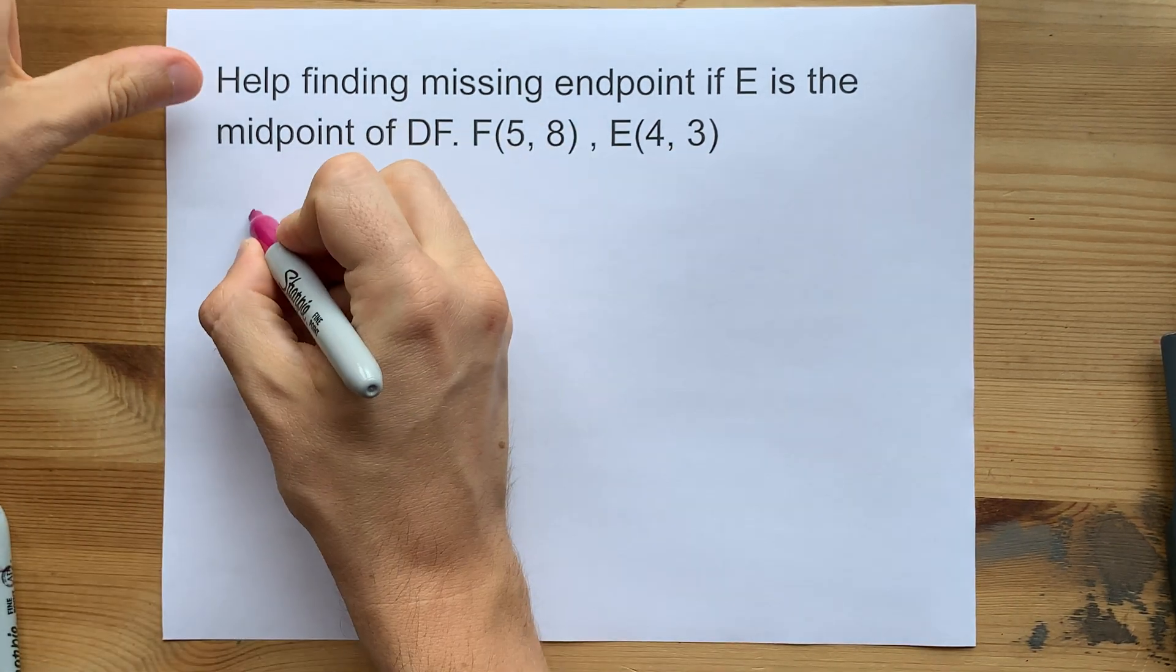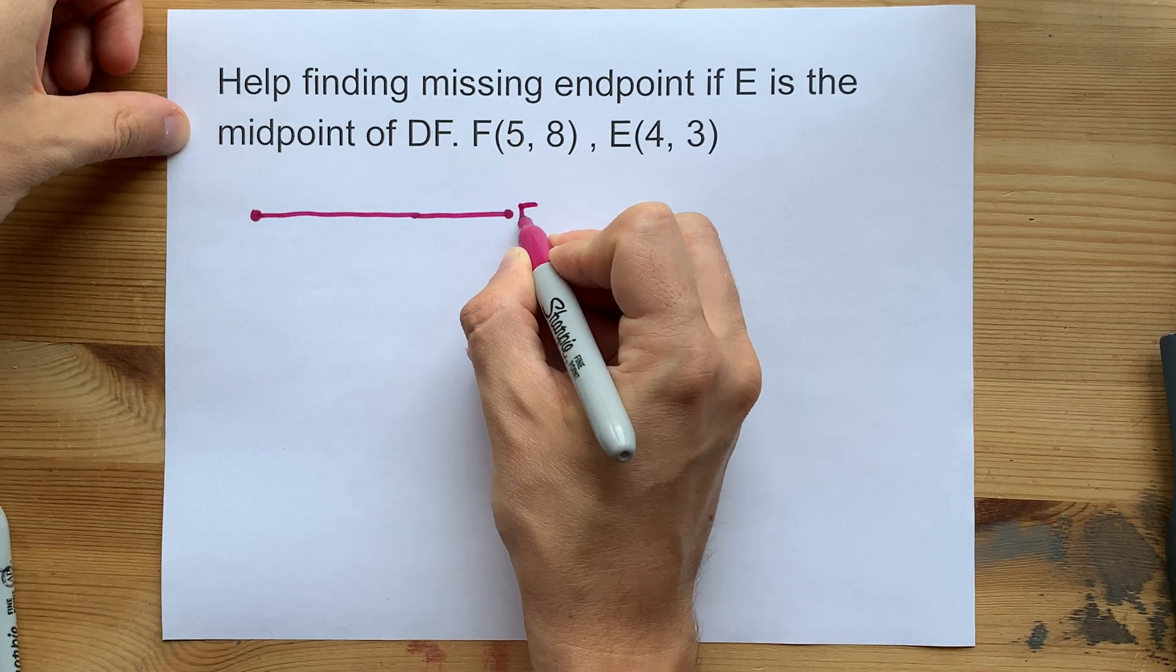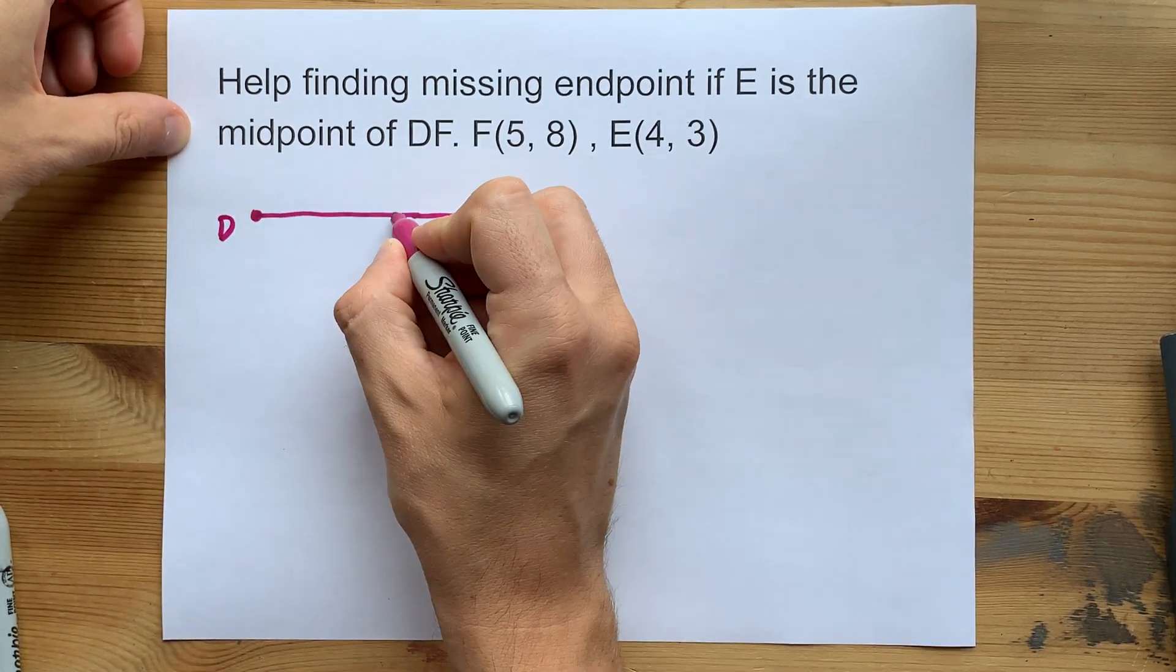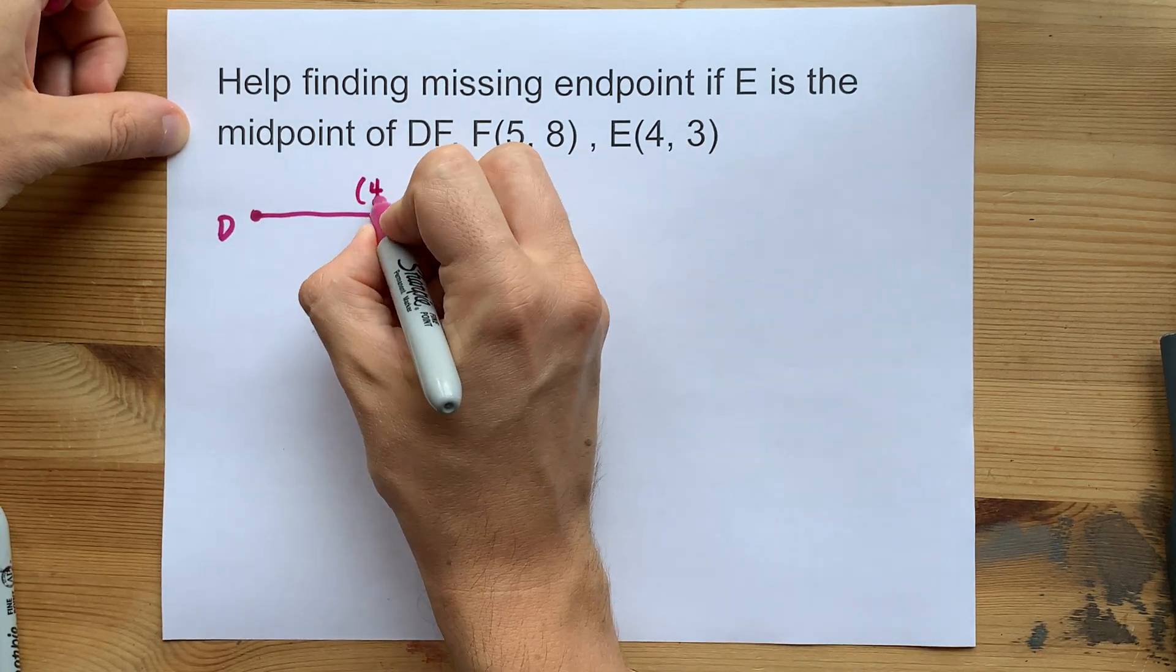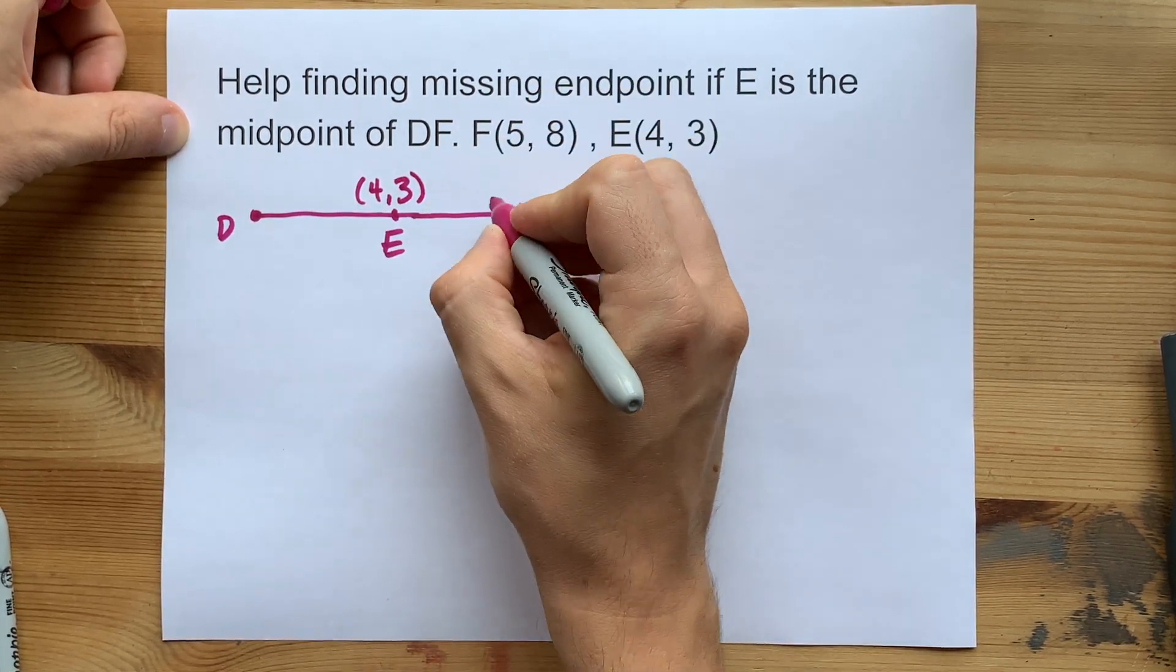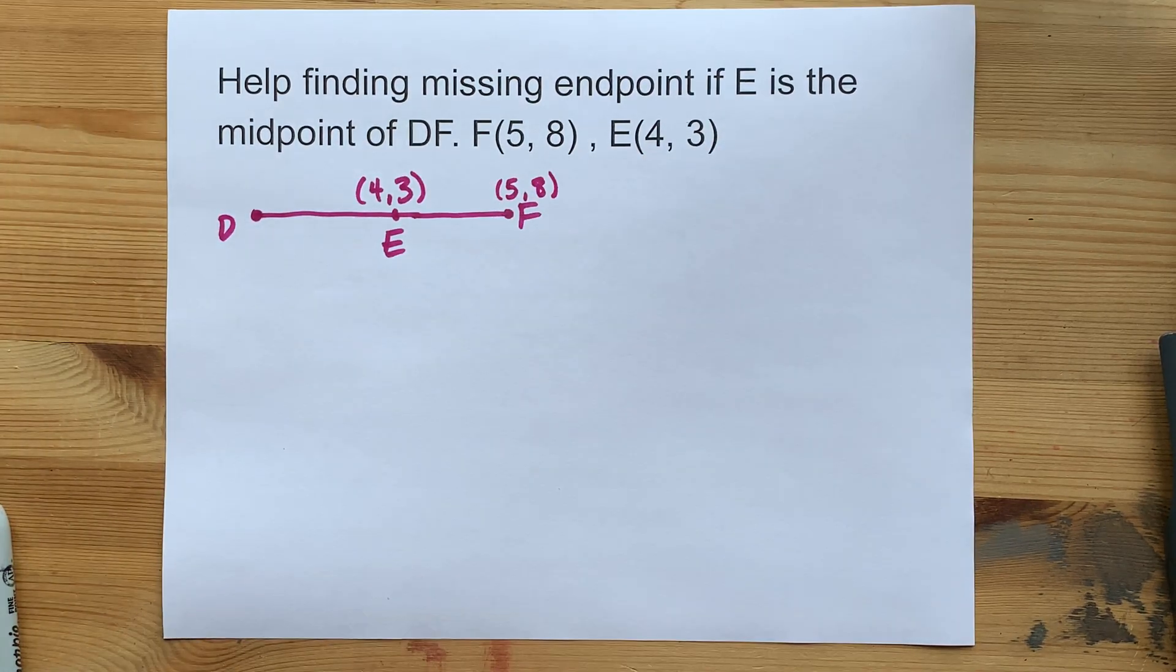First, I want you to draw yourself the line segment. It's called DF and the midpoint is E. E corresponds to four comma three. F corresponds to five comma eight. And you're being asked where D is.